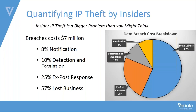Quantifying this further, a breach is usually going to cost your organization about $7 million. Breaking that down: 8% comes from notification costs — sending letters, paying for credit monitoring — like those notices you may have received from Target. 10% of the cost is for detection and escalation: bringing in forensics professionals or buying more technology to detect the problem instead of stopping it beforehand.